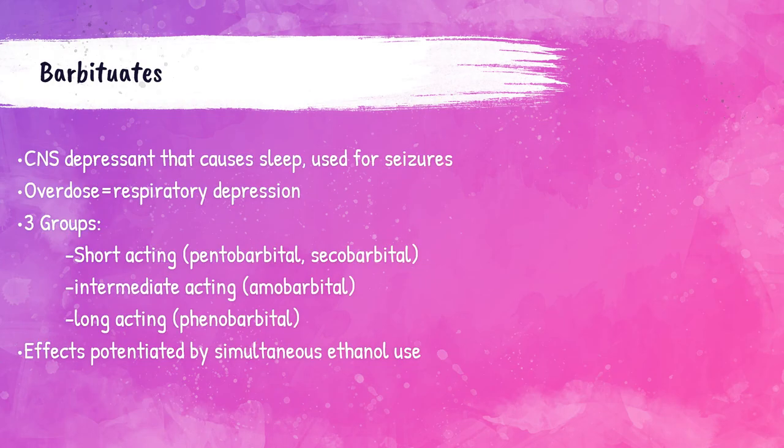Barbiturates are a group of central nervous system depressants that cause sleep. There are three groups: short-acting, intermediate-acting, and long-acting. When a patient overdoses on a barbiturate, it causes depression of the respiratory system. When used in combination with ethanol, the effects of the drug are potentiated — meaning they are worse.